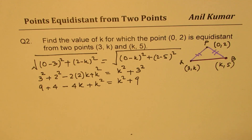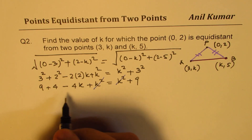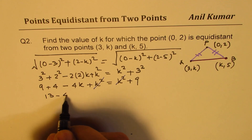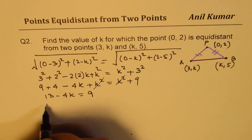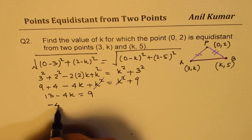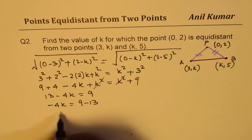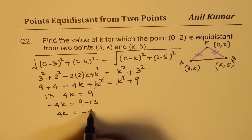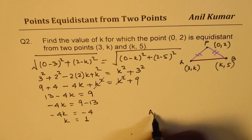From 13 - 4k = 9, we get -4k = 9 - 13 = -4, so dividing both sides by -4 gives k = 1. Our answer is k equals 1.